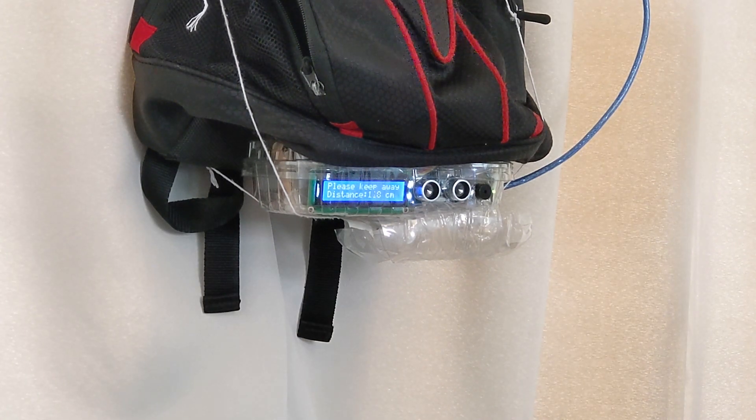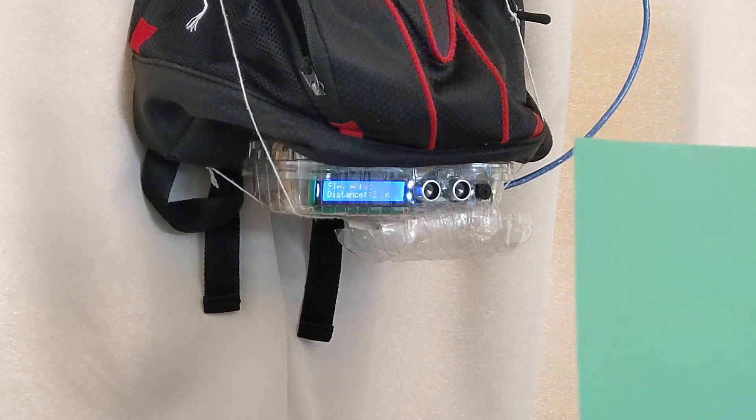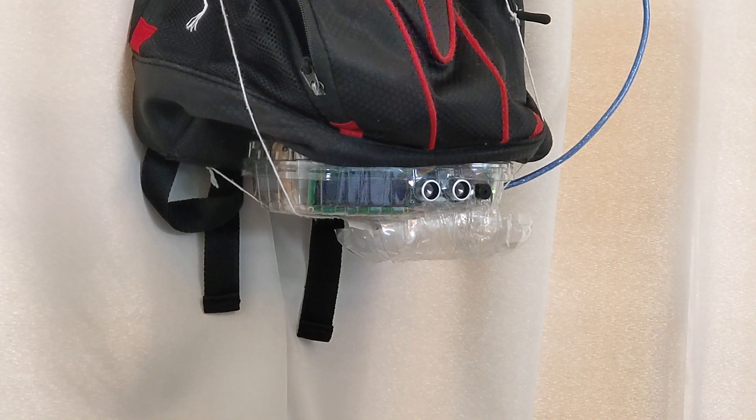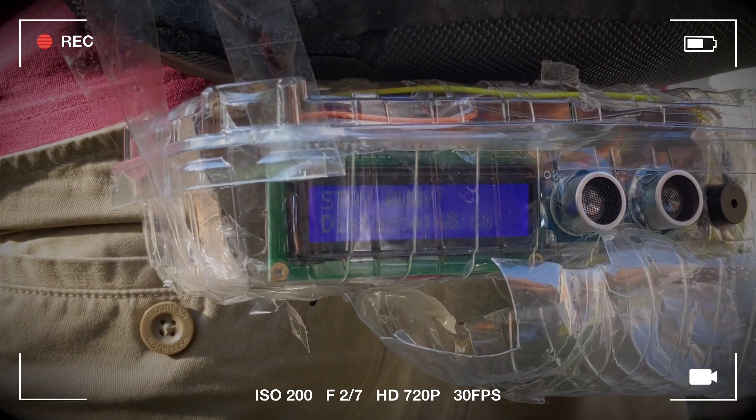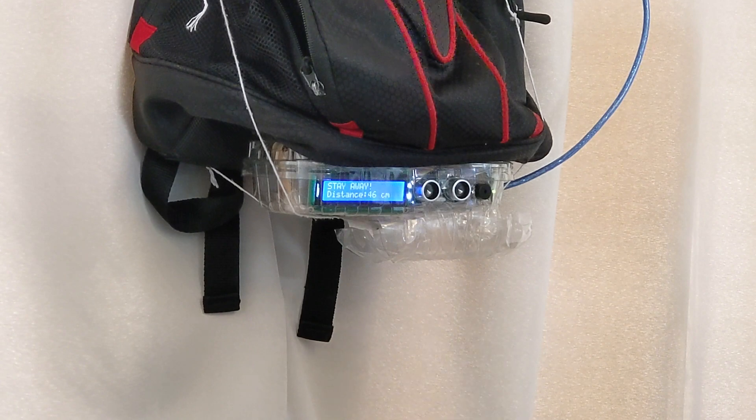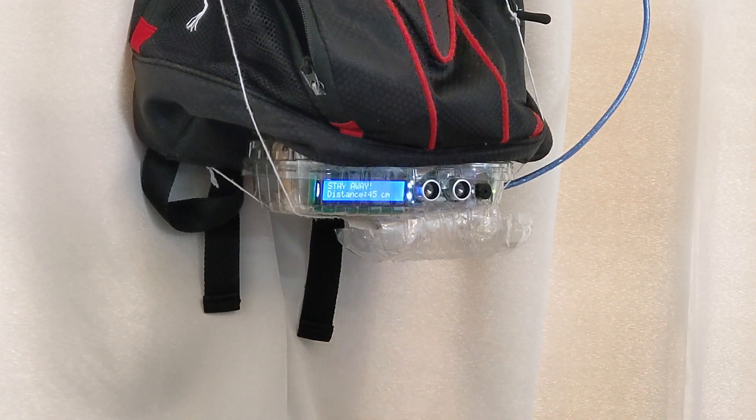If the distance is closer than 50 centimeters, the LCD shows stay away and the distance underneath and the backlight flashes. There is also another mode, which is the measuring mode.